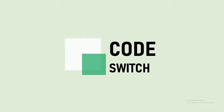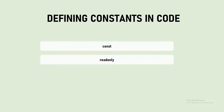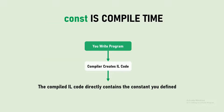Welcome back to Code Switch. You might have heard about the const and readonly keywords in C#. Let's see what the difference is. There are two ways you can define constants in C#: one, you can use the const keyword, and the other, you can use the readonly keyword. The const keyword is a compile-time constant.